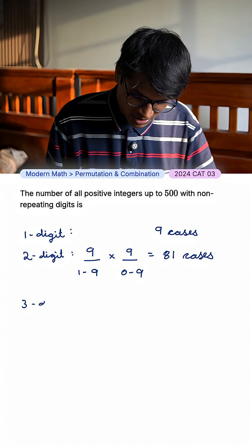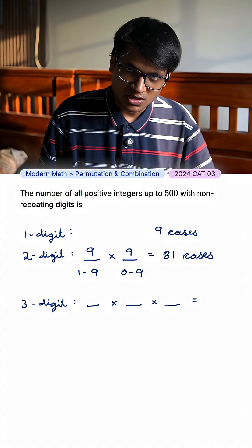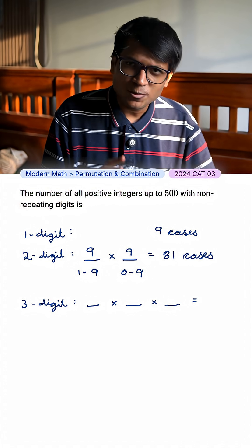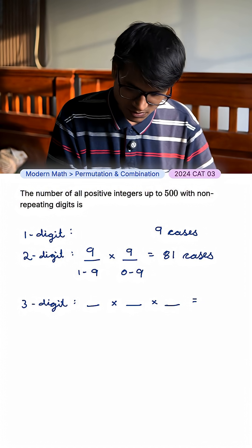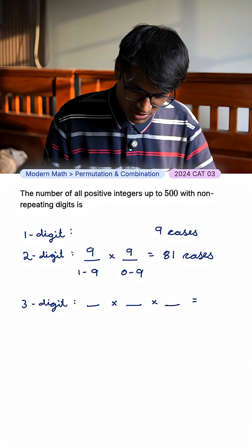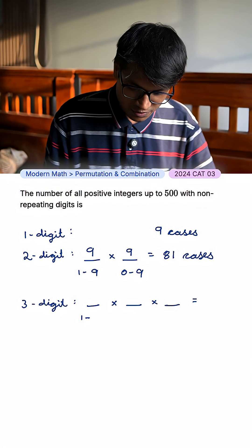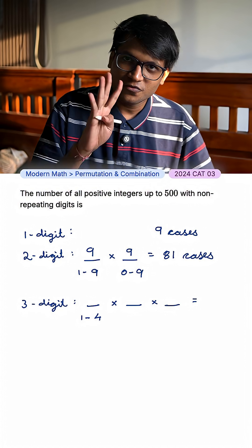Now let's look at 3 digit numbers. In the hundreds place, I need a number that is up to 500. Can 500 be a number? No, 0 is repeating. So in the hundreds place, I can put 1, 2, 3, 4. So I have only 4 options there.